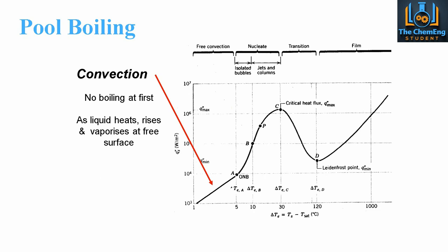Now the first part that we're going to see is from the beginning to this point A. Now this is a temperature difference, or a surplus temperature, of 5 degrees. So here what we have is just convective heat transfer taking place, because we don't actually boil anything at first. Now this essentially is just the liquid starting to heat and it will start to vaporise at its free surface. So this point here from the initial part to A is known as free convection.